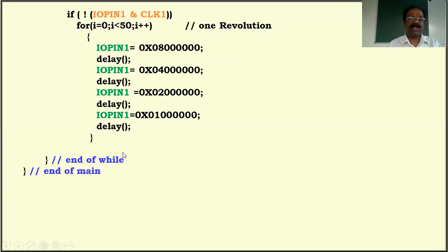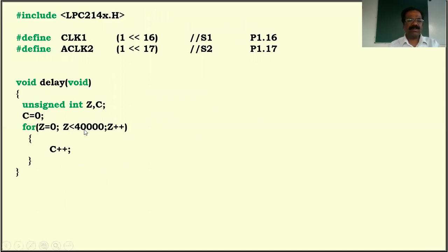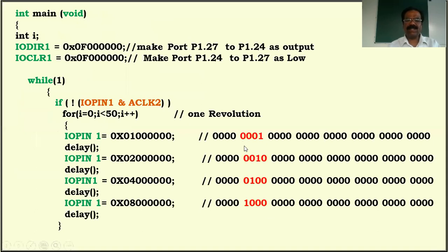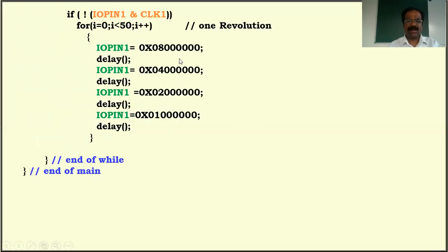So pressing S2 rotates the motor anti-clockwise and pressing S1 rotates it clockwise. To vary the speed, change the delay count value — increasing it decreases speed, decreasing it increases speed. To control direction, energize the windings in the proper sequence: this sequence for anti-clockwise and the reverse sequence for clockwise, as per my hardware specification. In the next video I'll give a demo of how it works. Thanks for watching, and if you have any doubts you can write in the comment section.